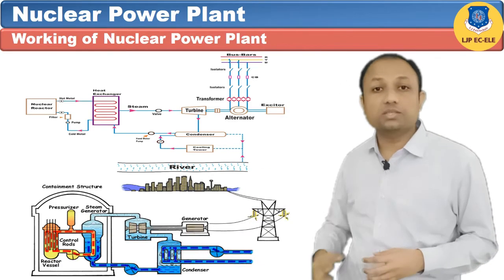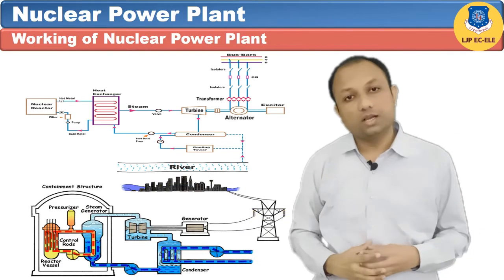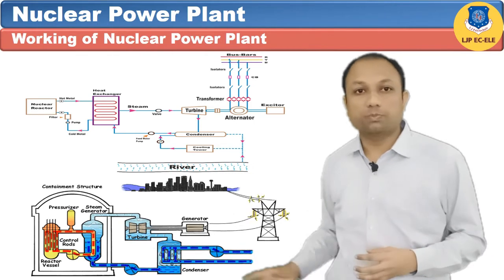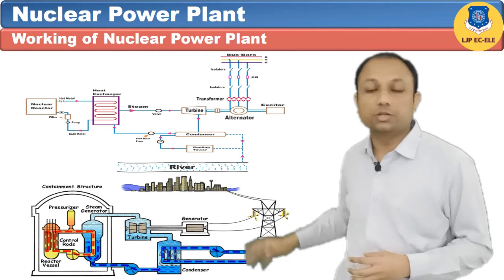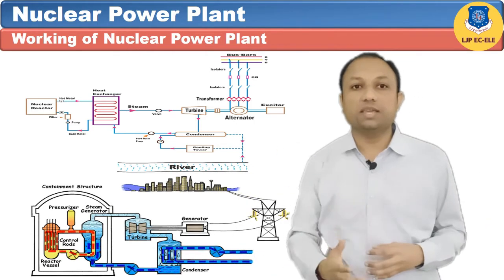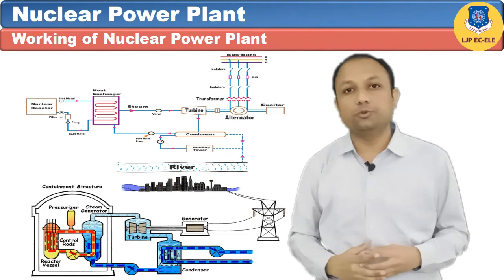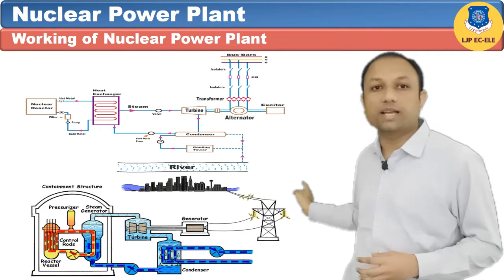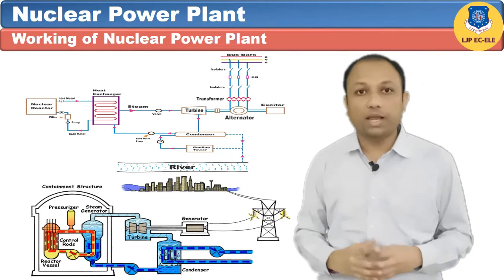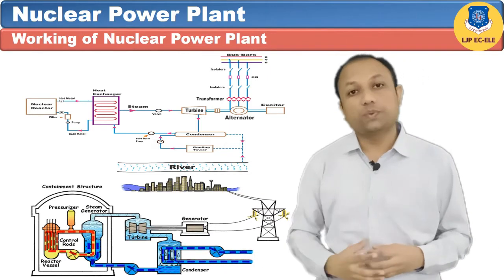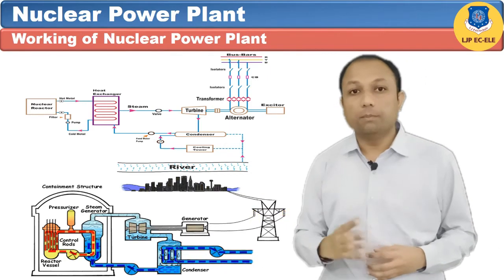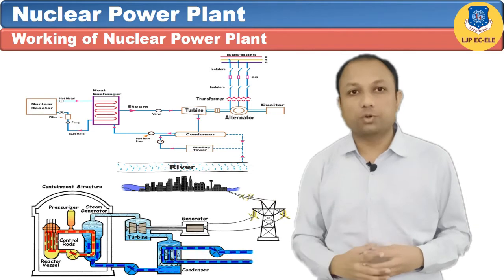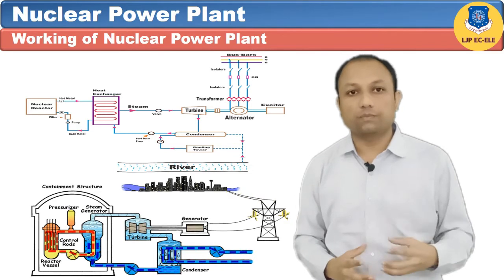Steam coming out of the turbine is taken to the surface condenser. Cooling water is passed through the tubes of the condenser, so the steam is condensed and converted into water. This water is taken out by the condensate extraction pump and is fed to the feed pump.